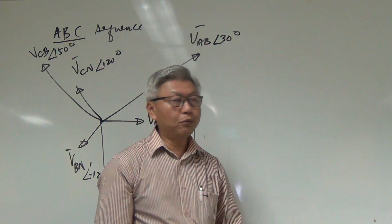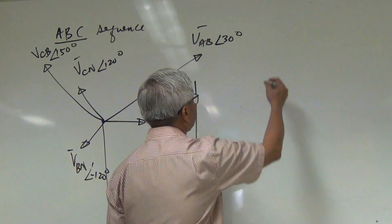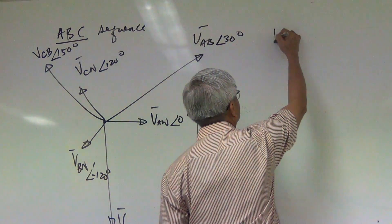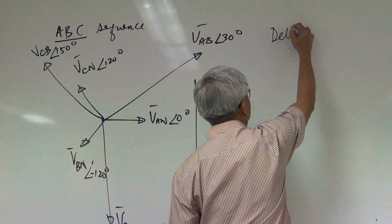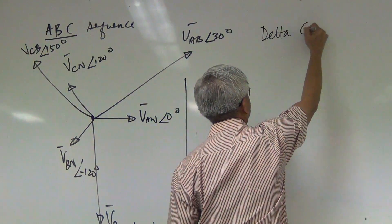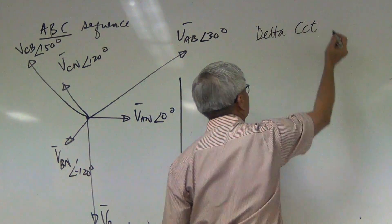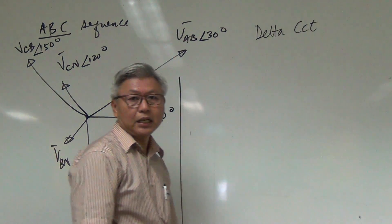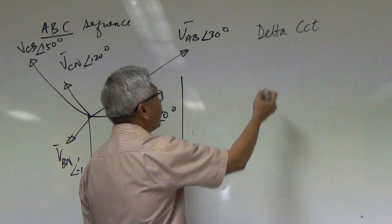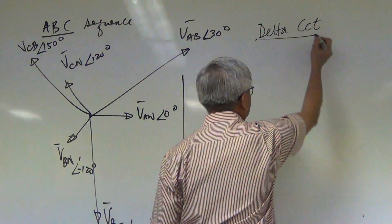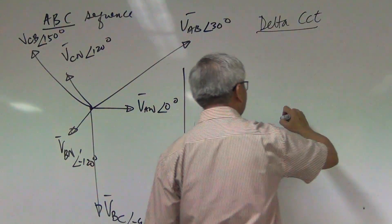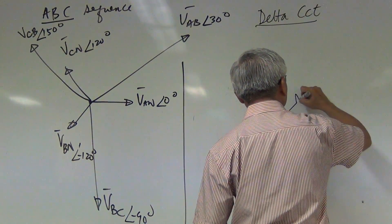The three-phase circuit which is called the delta circuit. The shape of the delta circuit looks like a triangle.